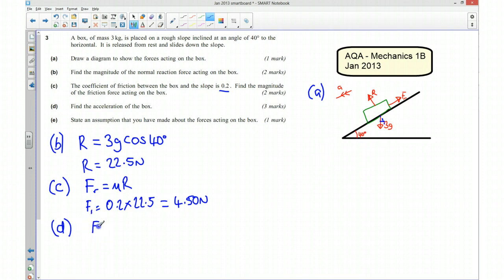So, start by saying F equals MA. And we've got 3G sin 40. And I take away my frictional force. So I'm going to take away 4.5. And that's going to be equal to the mass, which is 3 times by the acceleration. Okay, so I've used Newton's second law here. We've found the net force. And that's equal to mass times by acceleration. So if you stick that into your calculator, you get 14.4 is equal to mass times acceleration, which means the acceleration is going to be 4.80 metres per second per second.